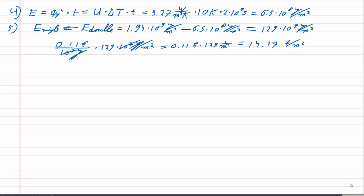However, the fixed costs are 2000 euros higher when using double glazed windows, so we need to save more than 2000 euros. To find the required surface area we calculate 2000 euros ÷ 14.17 euros/m² = 141.15 m². Since we can only use integer amounts of area, we need at least 142 m² for double glazing to be an economically viable option.